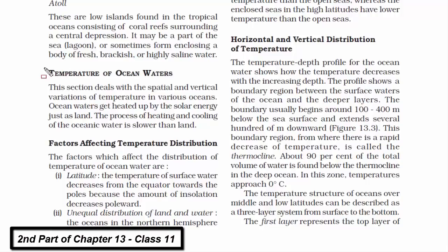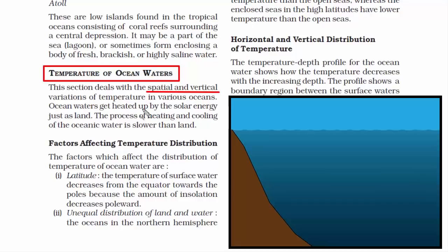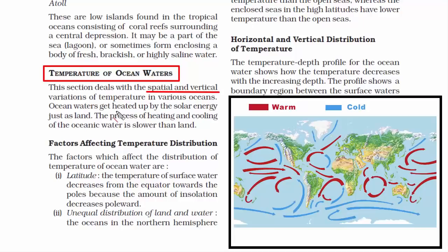Let's go to the next topic: temperature of ocean waters. The temperature of oceans depends upon spatial and vertical variation — meaning the temperature depends upon the depth of the ocean and the location where a particular ocean exists, meaning horizontally.